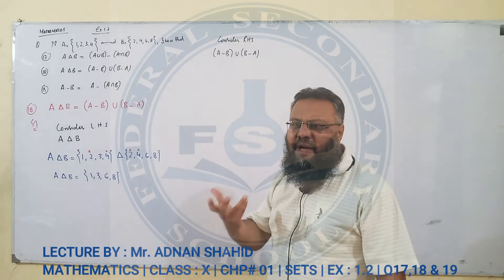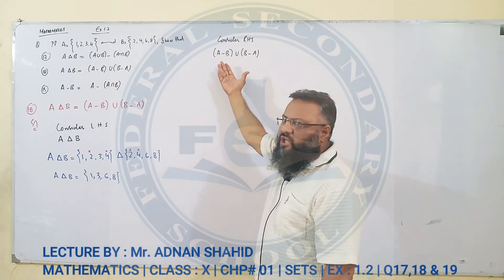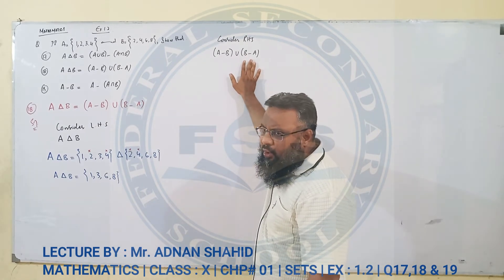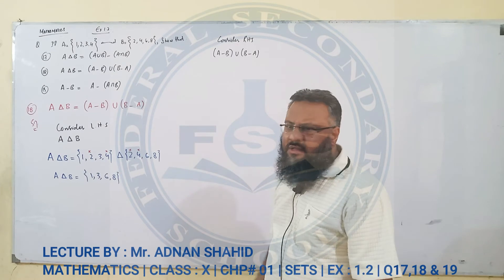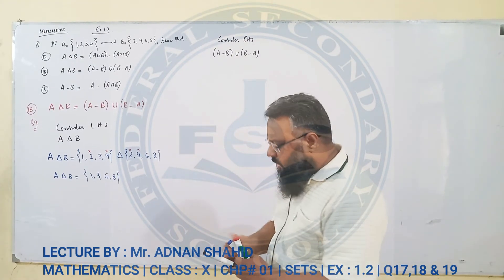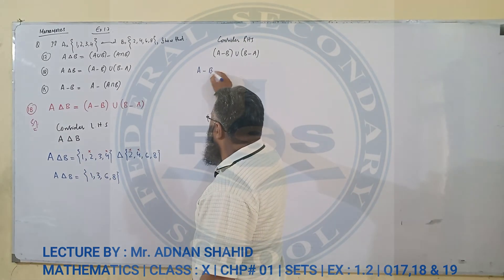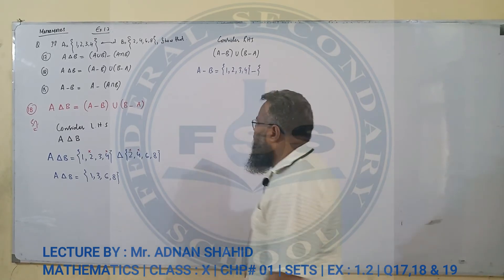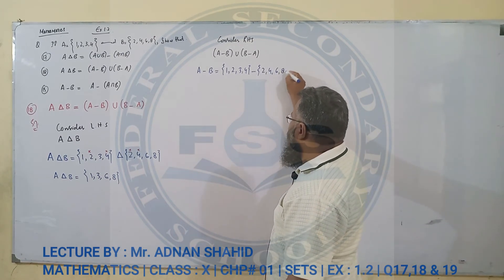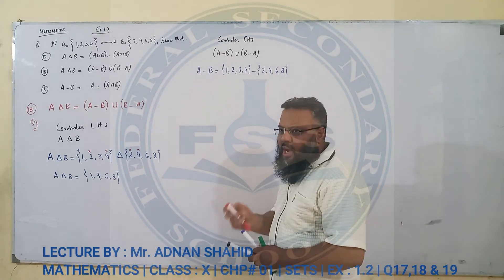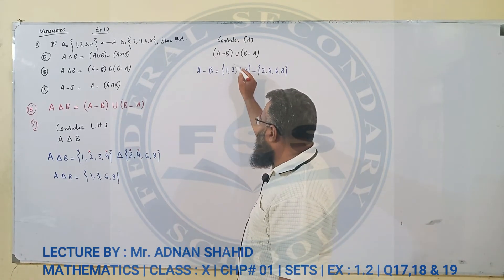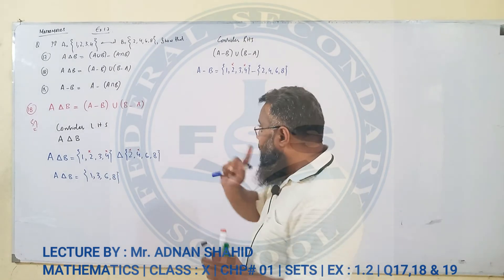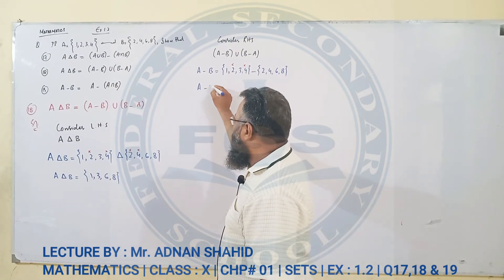जब bracket हो तो पहले bracket हल करते हैं। तो पहले A minus B निकालेंगे, फिर B minus A निकालेंगे, फिर union apply करेंगे। A minus B: A elements हैं 1, 2, 3, 4 minus B elements 2, 4, 6, 8. B के जो elements A में common हैं — 2 और 4 — उन्हें cross करते हैं। जो बचता है वो A minus B है।